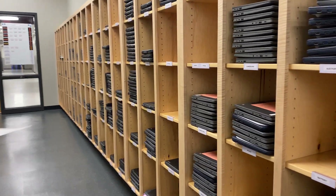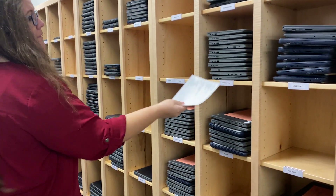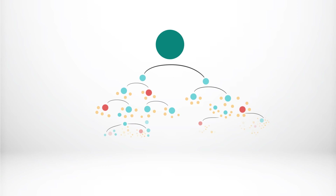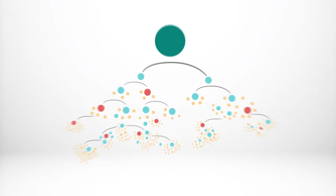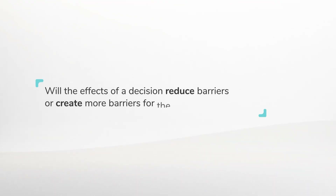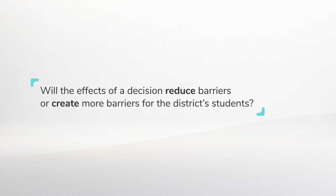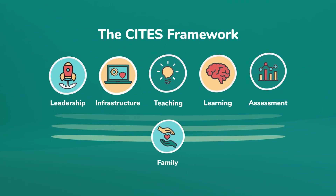In a school system, the decisions that one person makes can ripple across the entire district. For example, one decision by a single IT person can affect thousands of people in the district. So it's worthwhile to consider: will the effects of a decision reduce barriers or create more barriers for the district's students? If you want to efficiently and effectively use technology to serve learning for all students, the SITES framework is for you.